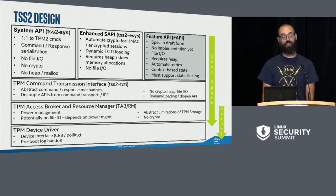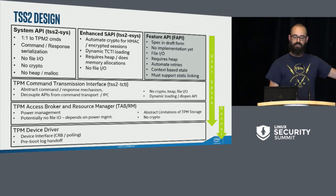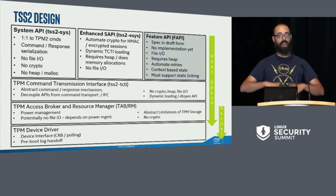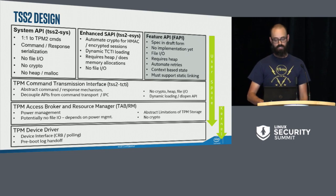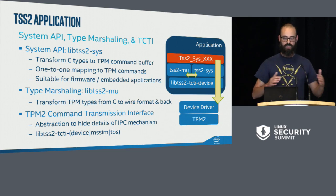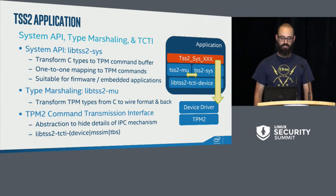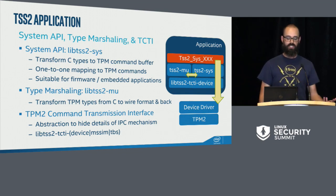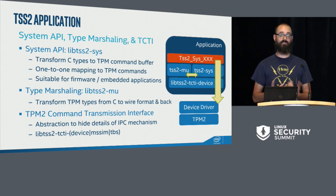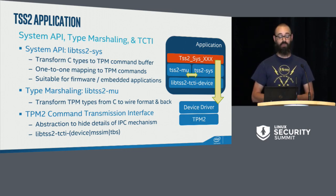If your distro has set up packaging correctly, you can give ESYS a null pointer for the TCTI and it'll pick the right one. You can still override it by initializing one yourself. The Feature API box shown in gray still isn't done — it's meant to further abstract the TPM but is still very much under consideration. Internally the System API uses a utility library for type marshalling; for every type in the TPM spec, there is a corresponding marshal and unmarshal function.